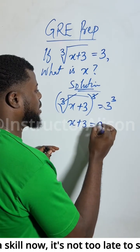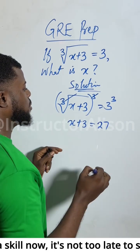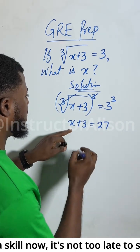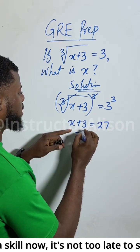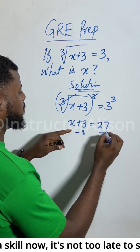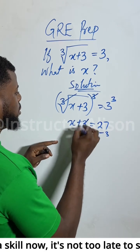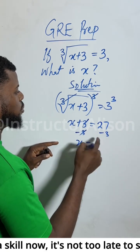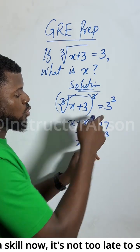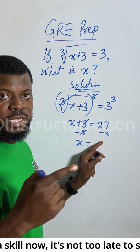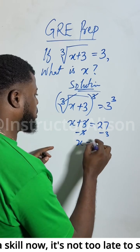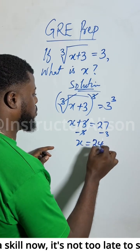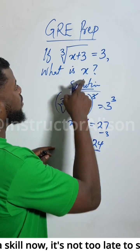So x plus 3 equals 27. To find x, subtract 3 from both sides of the equation. This gives us x equals 27 minus 3, which is 24. So x equals 24.